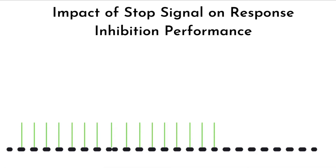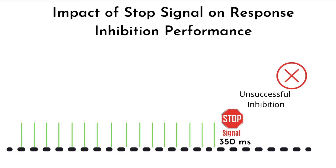Now, imagine being presented with a stop signal at a greater delay — say about 350ms. It is likely that you will have an unsuccessful inhibition in this trial. This is because presenting the stop signal at a greater delay means the Go cue has been on the screen for much longer, which initiates the go response, putting you in the response execution phase instead of the response inhibition phase.